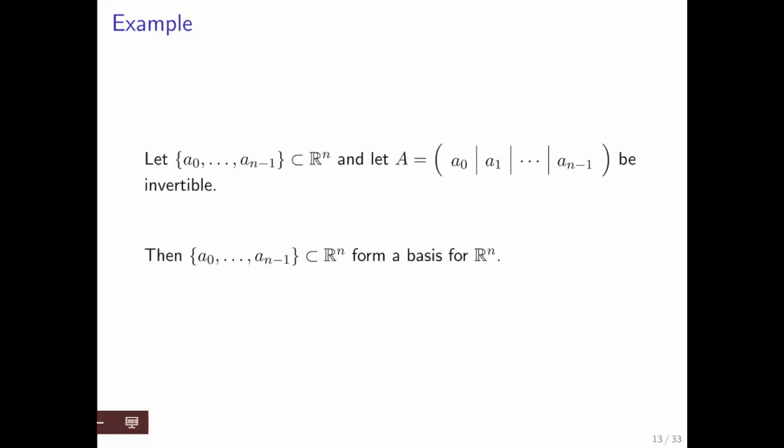First of all, if A is invertible, then we know that Ax equals b always has a solution, and therefore any vector b in R^n can be written as some linear combination of those vectors. We know that these vectors are linearly independent because otherwise matrix A would not be invertible.